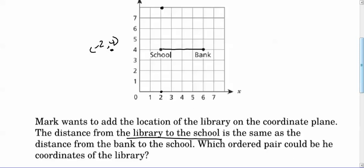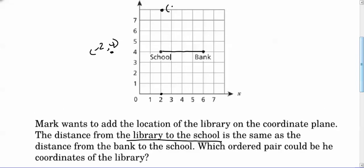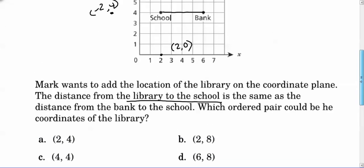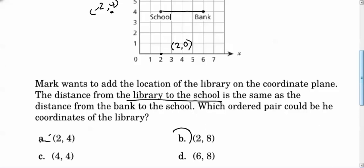It says which ordered pair could be the coordinates of the library. So right here, we've got two, eight, because we're going over two, up eight. In this case down here, we have two, zero. So let's see if we can find any of those in our choices. So two, four is the location of the school, for someone who didn't read carefully. Choice B, two, eight would be one of our possible locations. So the answer is choice B.